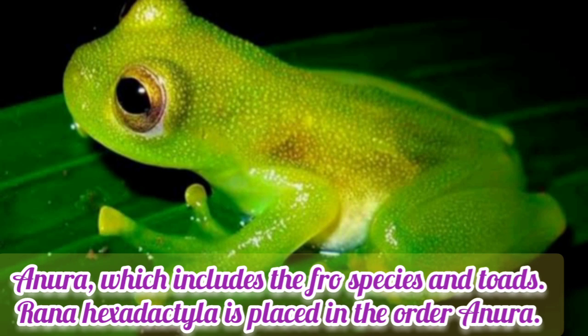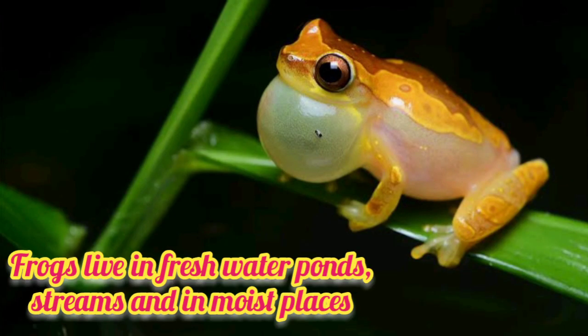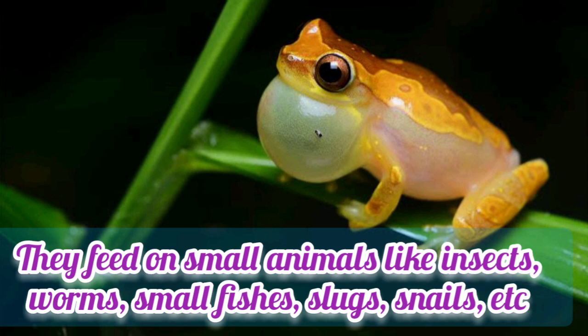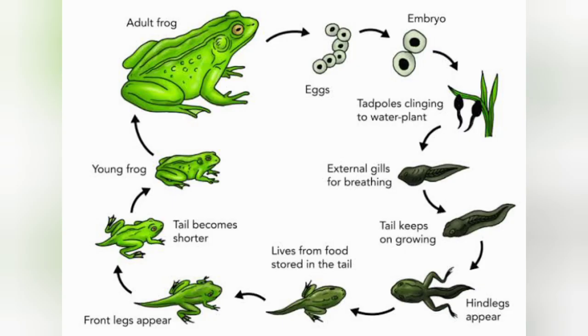Rana hexadactyla is placed in the order Anura. The frog lives in freshwater ponds, streams, and moist places. They feed on small animals like insects, worms, small fishes, slugs, and snails. During larval development, froglets live in an aquatic environment and breathe through gills.